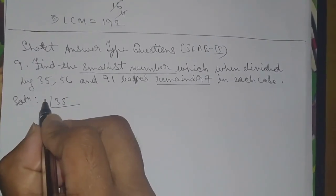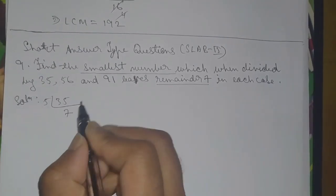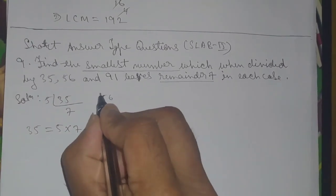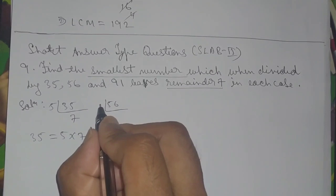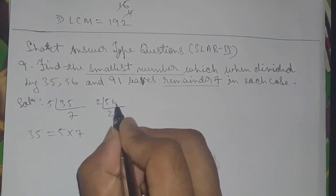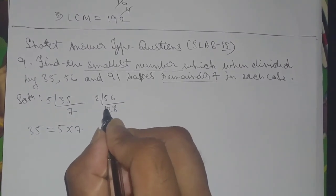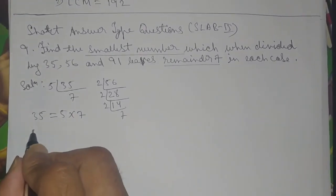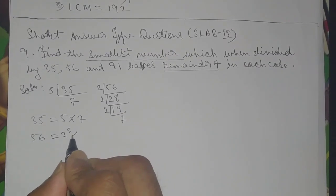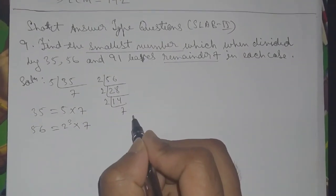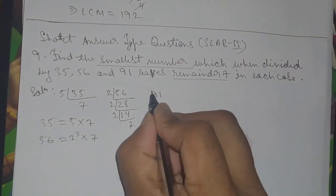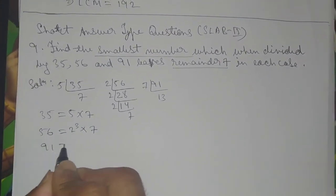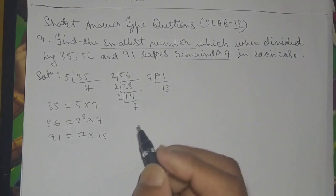Factorizing 35: 5 into 7, so 35 equals 5 into 7. Next, 56: dividing by 2 gives 2, then 16, two into 7 gives 14 — so 56 equals 2 cubed into 7. Next, 91 factorized: 7 into 13, so 91 is equal to 7 into 13.